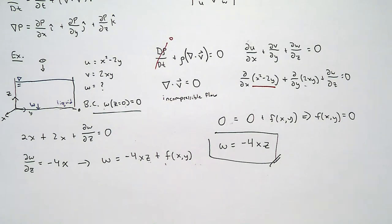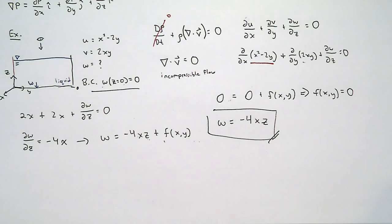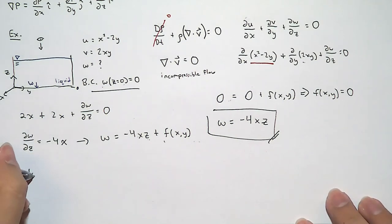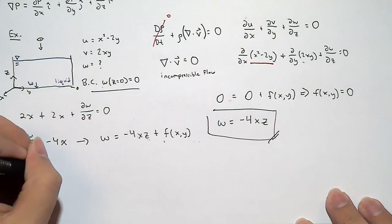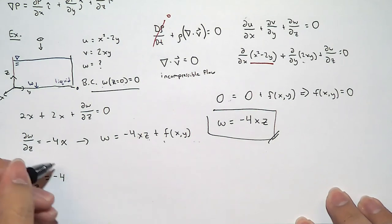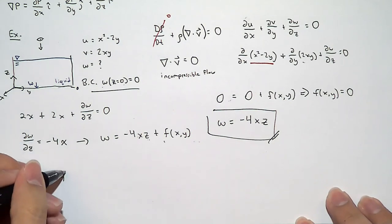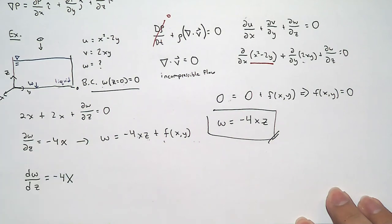Let's pretend this was an ordinary differential equation. If this were just an ordinary differential equation, dW/dz = −4 times some constant X — treating X as a constant — how do we solve this?